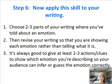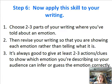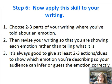Step six: now apply the skill to your writing. Choose two to three parts of your writing where you've told about an emotion, then revise your writing so that you are showing each emotion rather than telling what it is. It's always good to give at least two to three actions or clues to show which emotion you're describing so your audience can infer or guess the emotion correctly.